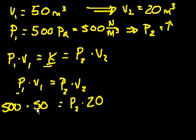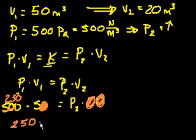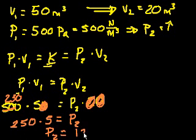And so let's see what we can do. We can divide both sides by 10, and then we can divide both sides by 2. So that becomes a 250, and so we get 250 times 5 is equal to P2.